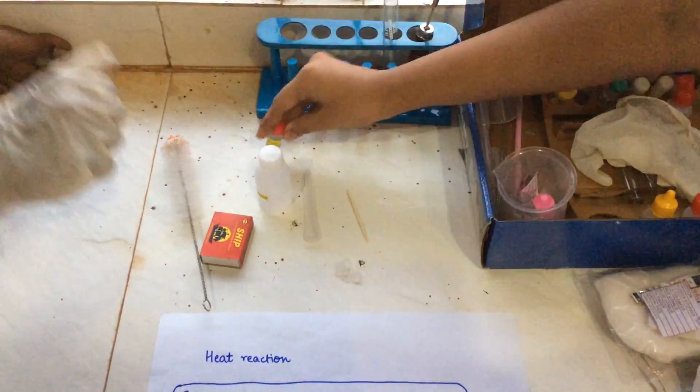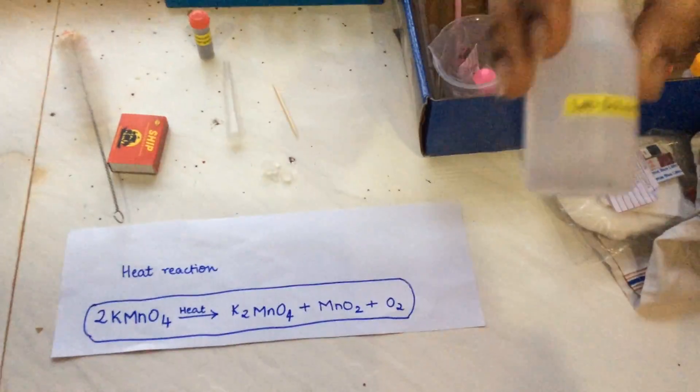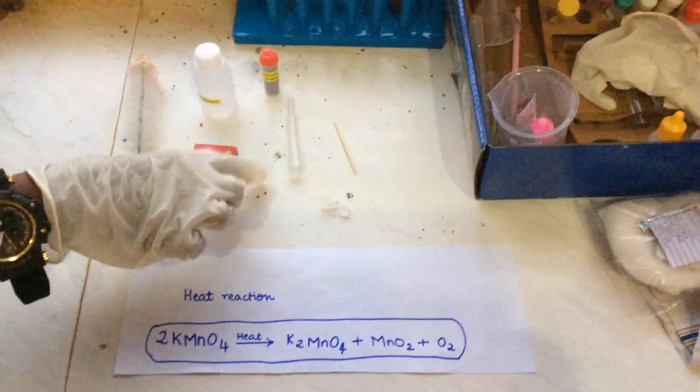The chemicals are potassium permanganate, it's dark purple in color, and the lab solvent we are using here is ethanol. Now if we start,